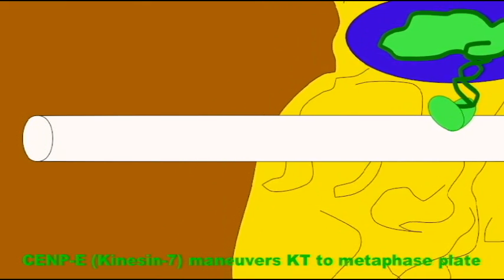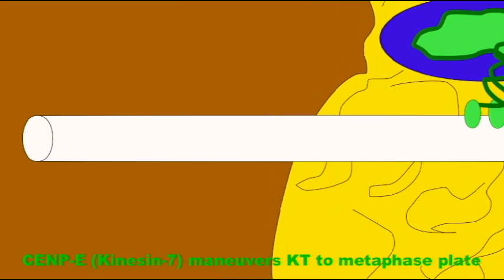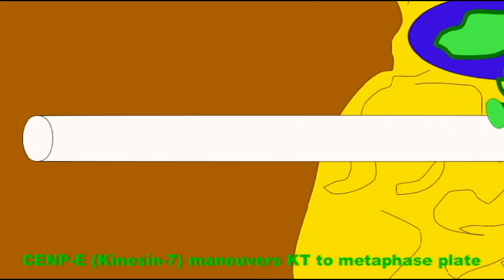The molecule kinesin-7, which is very important in this process at metaphase, is also known as CENP-E.